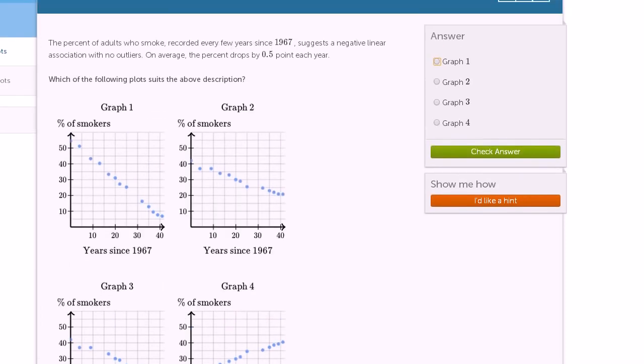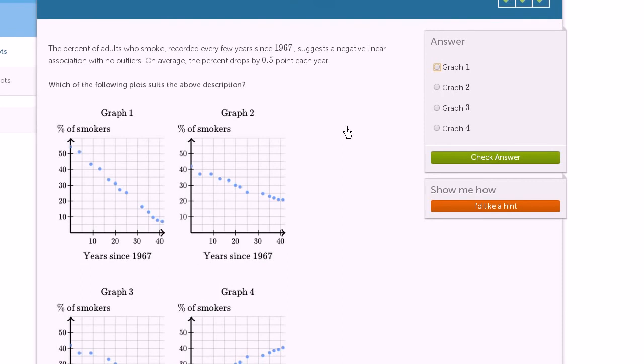We have to pick between graph one and graph two. The other hint they give us, or piece of data they give us, is that the percent drops by 0.5% each year. Here, what's happening? As 10 years go by, in 1967, it looks like we're at about 55%, and then 10 years go by, we are roughly at around 45%, a little under 45%. So we dropped 10% in 10 years.